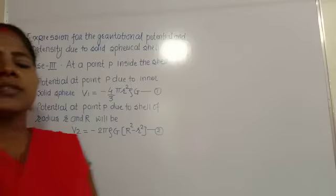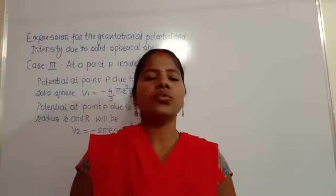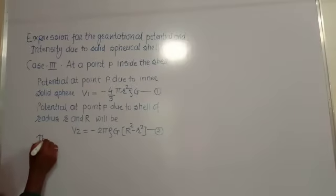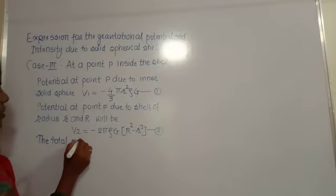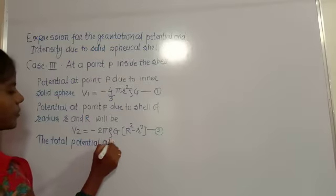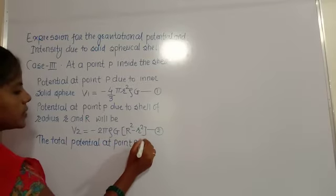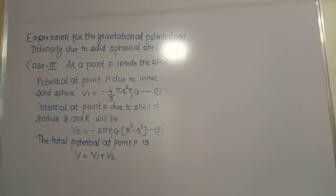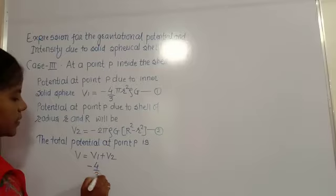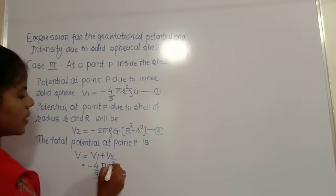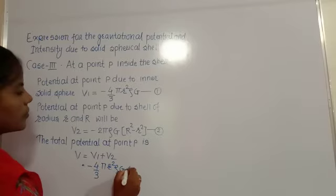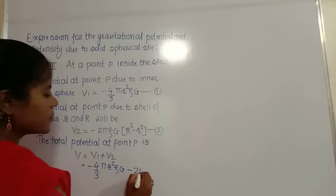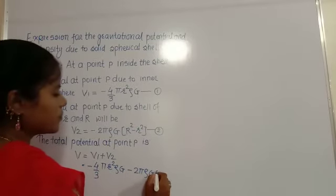In this class we continue by finding the total potential at point P due to the solid spherical shell for Case 3, where P is situated inside the shell. The total potential V = V1 + V2. Substituting the values: V = −(4/3)πr²ρG + [−2πρG(R² − r²)].